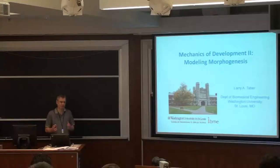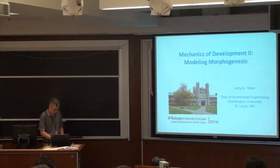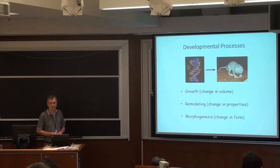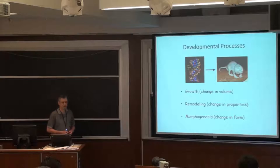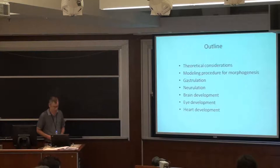I'm going to focus on the modeling side of development because that's really where my expertise is. As far as mechanics goes, we can divide development into three main processes: growth, which we can define simply as a change in volume; remodeling, a change in properties, primarily material properties; and morphogenesis, which is a change in shape or form. In reality, all of these processes are coupled together, but it's useful to separate them out. Today I'm going to talk about primarily morphogenesis.